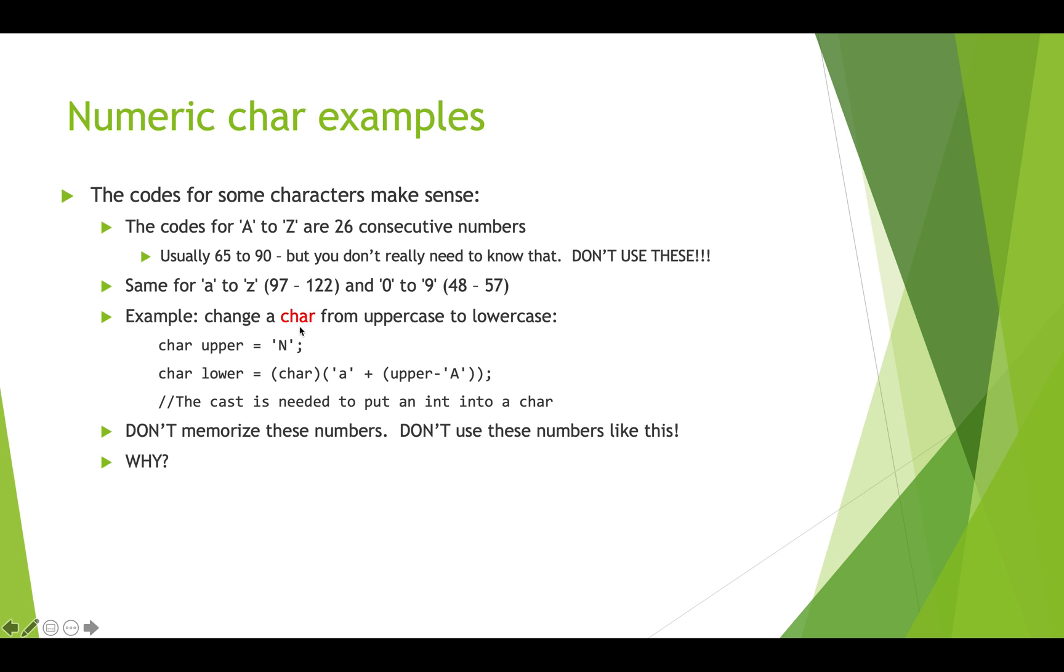You can use this information to do something like change a character from uppercase to lowercase. Say we've got an uppercase character capital N and we want the lowercase version, we can take lowercase a and add our character N minus uppercase A which basically gives us the offset in the capital alphabet. We add that offset to the small alphabet and lower should then become lowercase n. And again we need this cast of a char to put this integer operation into a smaller type.